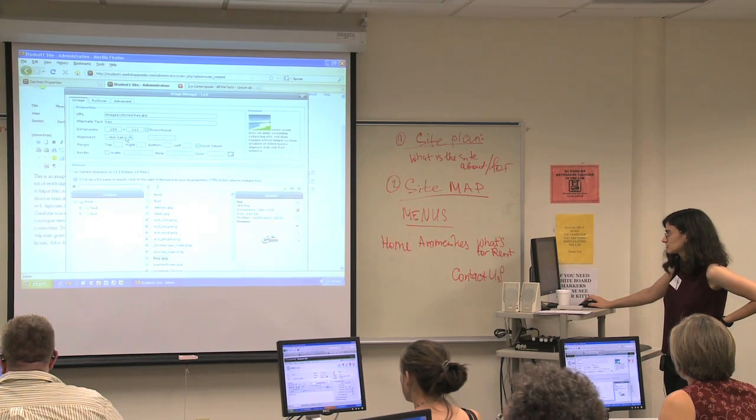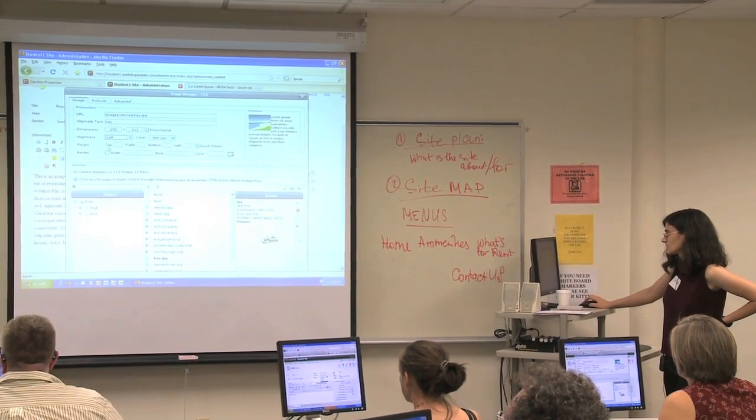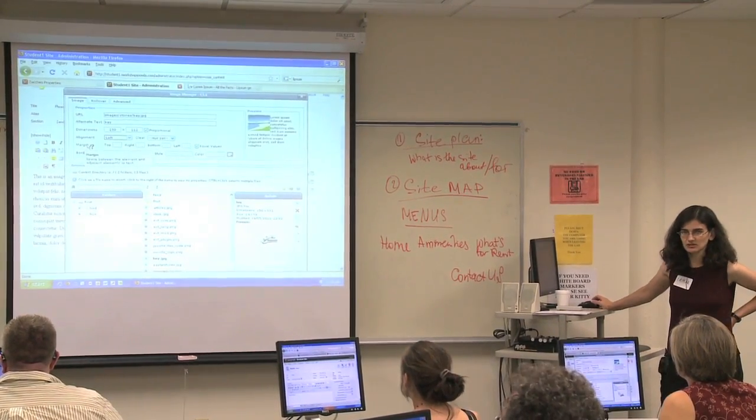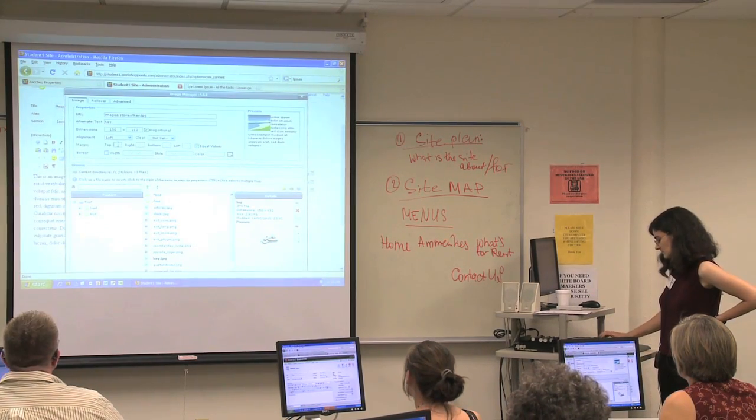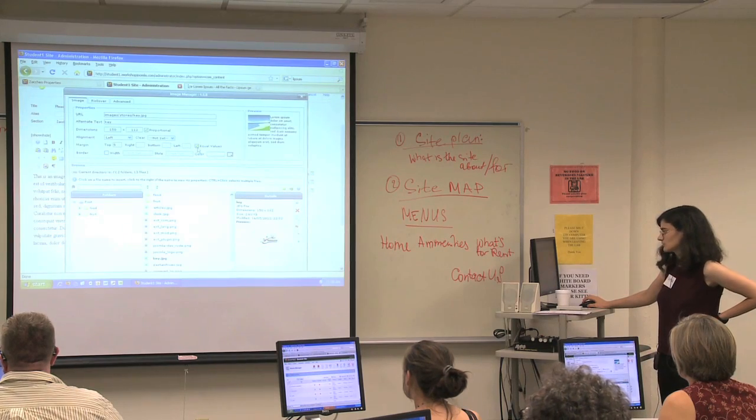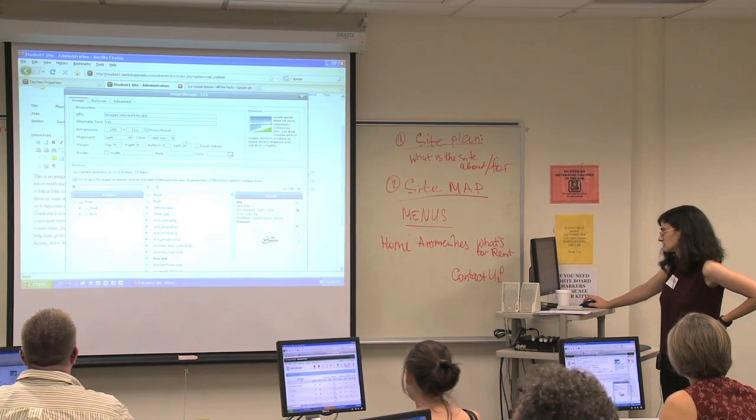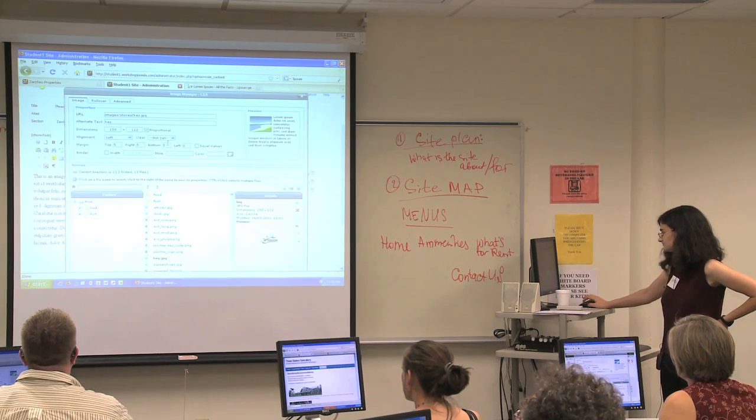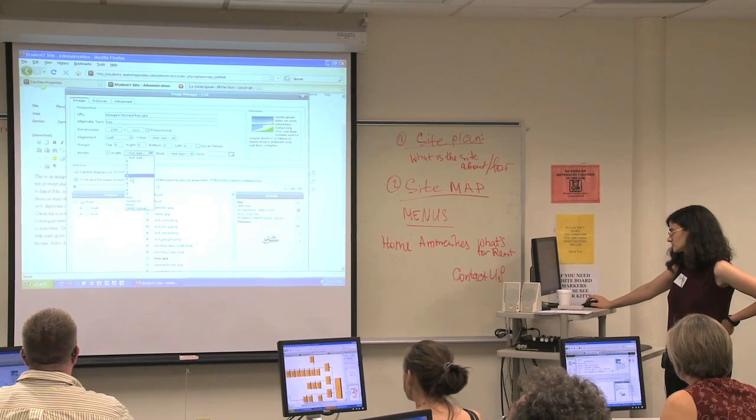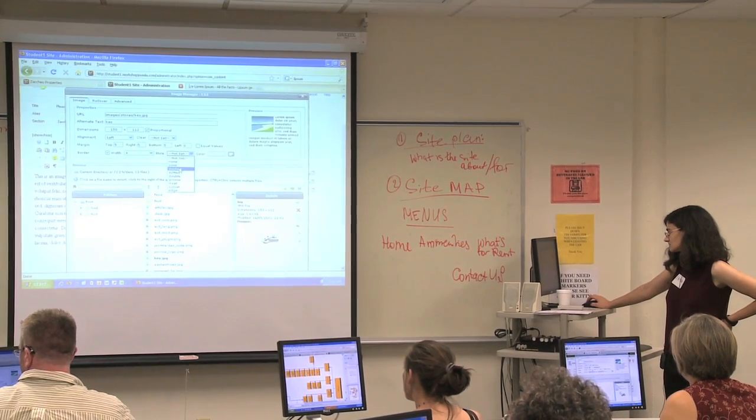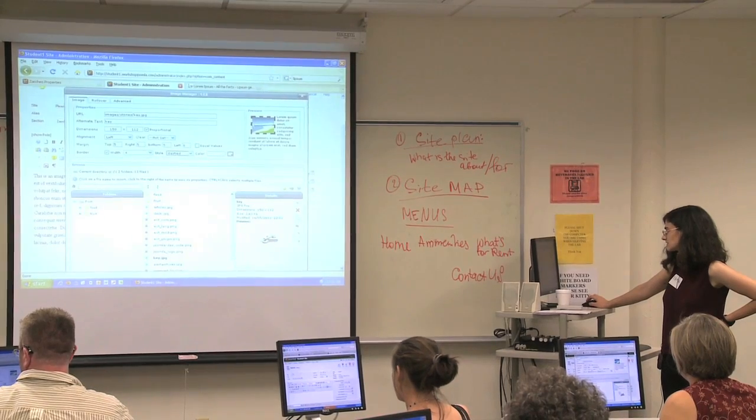It will give you the dimensions, and it will let you choose alignment. Margin is how much space between the image and the text. Often, if you're going to have something in the middle, I like to put in, let's say, five or so. And if you don't unclick equal values, it will be five all around. If you do unclick it, you can do it differently. I don't usually do borders on images, but you can. If you do a border, just set the style. And you'll see there's a preview on the right-hand side. You can see what that would look like.